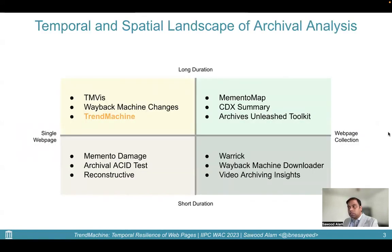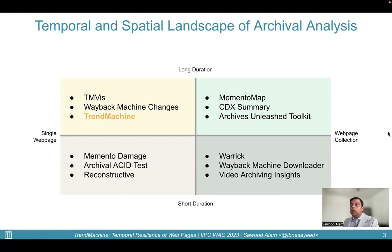As the web archiving discipline matured, many tools, frameworks, and research analyzed the archival landscape in both temporal and spatial dimensions by IAPC members, researchers, and developers at large. These include works that deal with a single archived web page over a short period of time, a collection of web pages over a short duration, a large collection over a long period of time, and a single web page over a long period of time. Our new system, Trend Machine, belongs to this last family of tools.